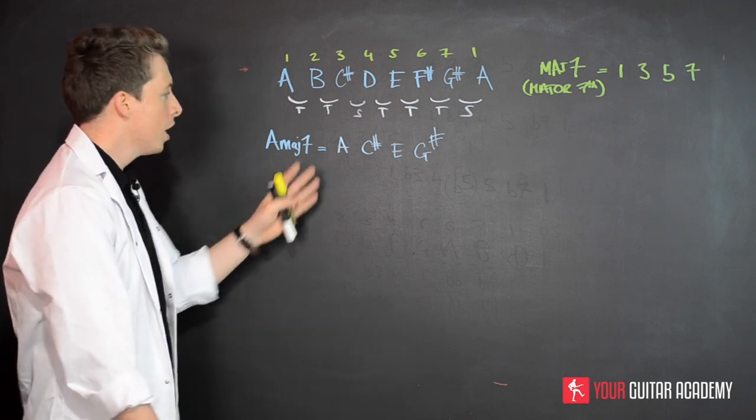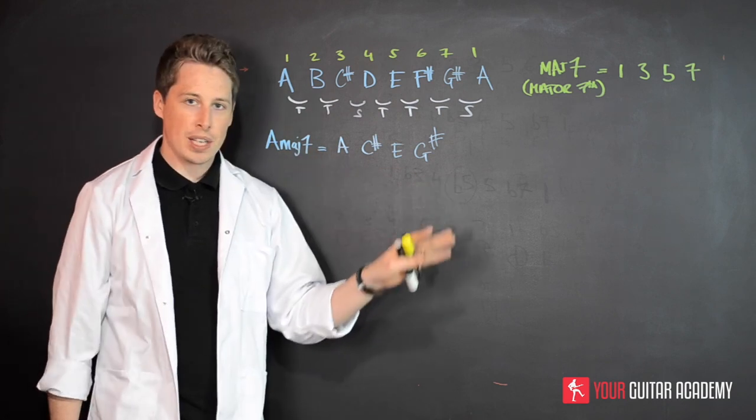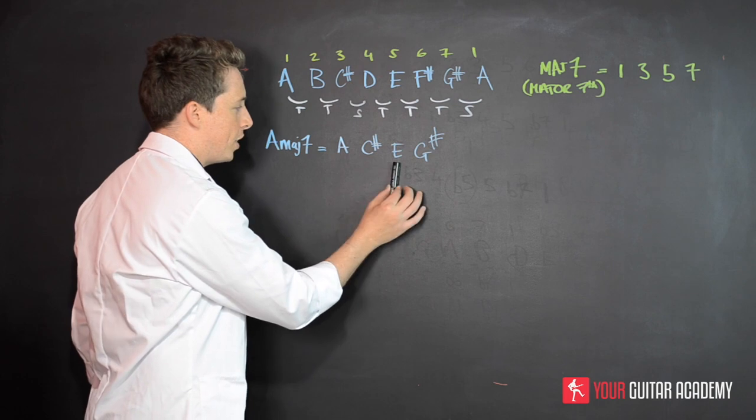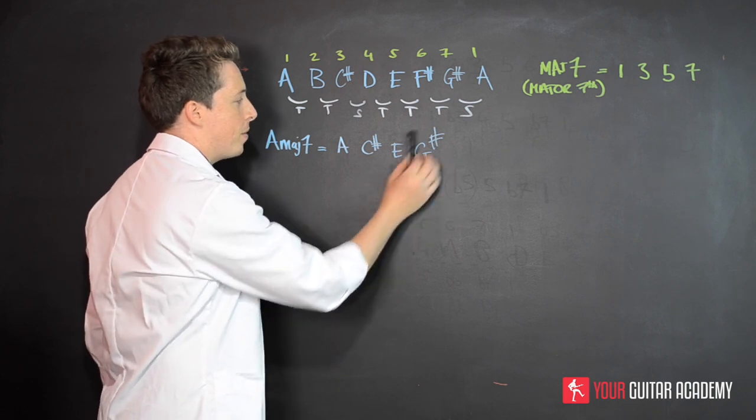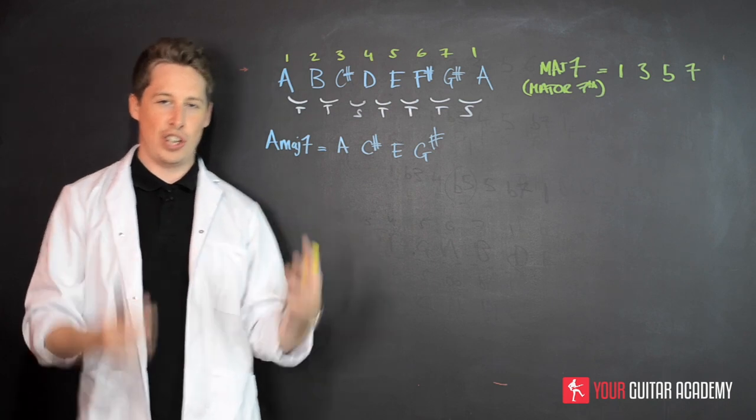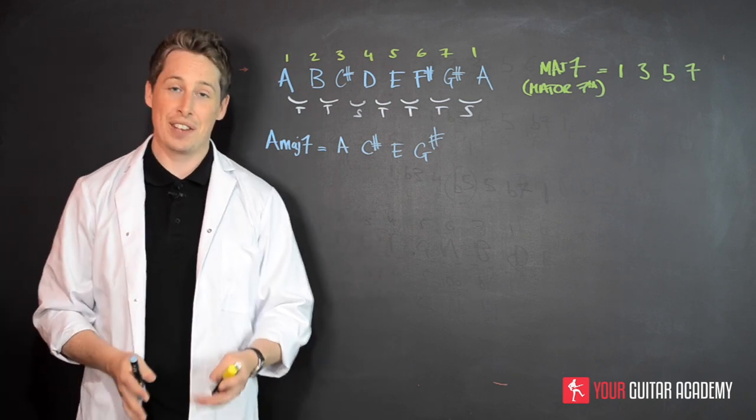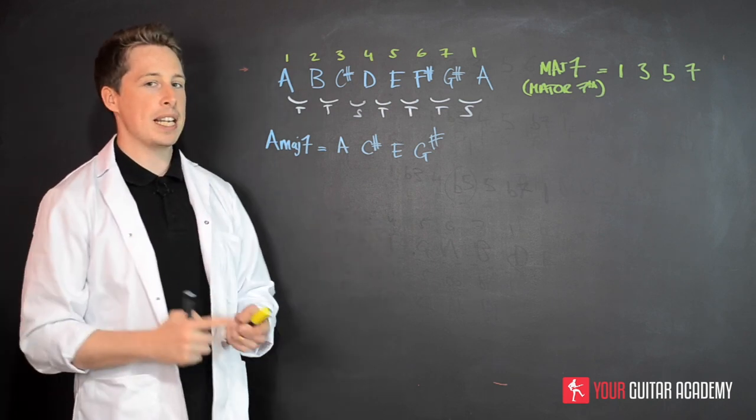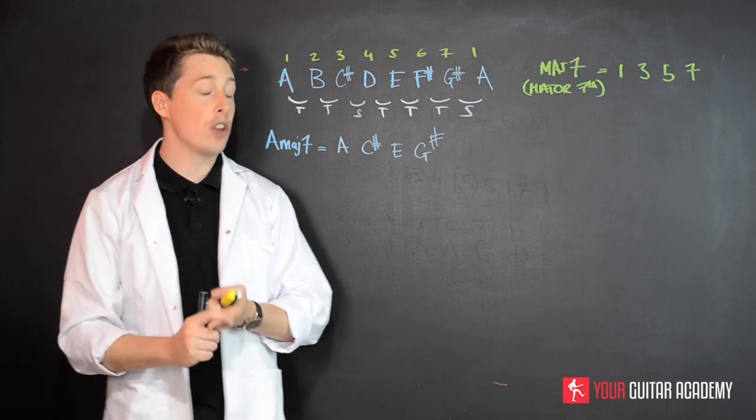When you put these all together, you're going to hear that you've got the major element, and then this G sharp is going to give that relaxed, chilled out feel that a major seven has. You're going to really typically come across major seventh chords a lot in jazz, lounge music—something that's a bit more relaxed.